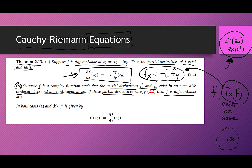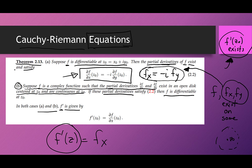Parts A and B are not converses of each other because the hypothesis in B is pretty strong — your partials have to exist on an open disk, whereas in A, you just have to be differentiable at a single point. In both cases, F prime of Z is given by just the partial of F with respect to X. So to find your derivative F prime of Z, all you have to do is take the partial with respect to X. Isn't that insane? That's so crazy.